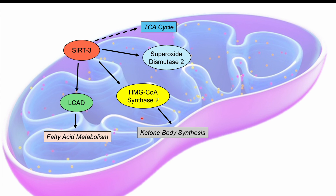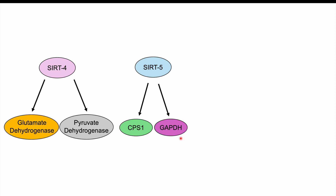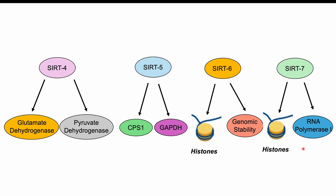Those are the three most studied sirtuins. SIRT4 and SIRT5, like SIRT3, are located in the mitochondria. SIRT4 can activate glutamate dehydrogenase and pyruvate dehydrogenase — important in energy metabolism. SIRT5 activates carbamoyl phosphate synthetase 1, a key enzyme in the urea cycle, and also activates GAPDH, making it important in glycolysis. SIRT6 is found in the nucleus, acts as a histone deacetylase, and has functions in genomic stability. SIRT7 is located in the nucleolus, also acts as a histone deacetylase, and has functions acting on RNA polymerase 1.